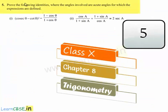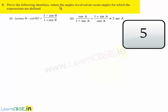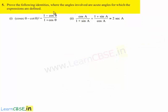Moving on to the fifth question: prove the following identities, where angles involved are acute angles for which the expressions are defined.